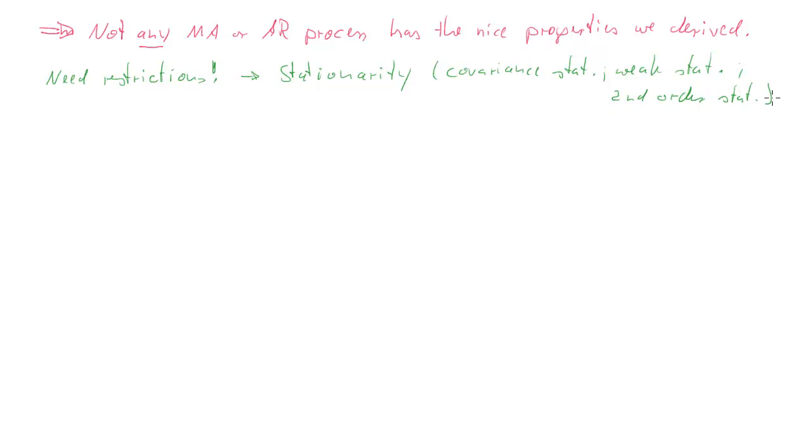Now what is the definition of this concept of stationarity? There are three elements to this, and they are related to the moments and properties of the process Y. So we say that a stationary process has the following properties. First, the expected value of Yₜ is equal to μ, or whatever letter you use, but it's equal to a constant which is finite and is independent of time t. So you can see on the right hand side there is no t subscript.